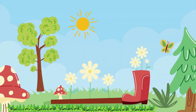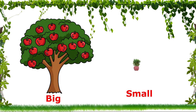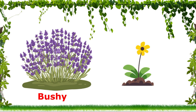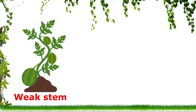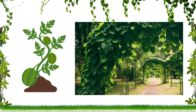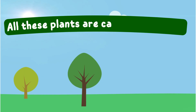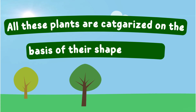Many plants grow in a garden. Some are big, some are small, some are bushy, some are very small. Some plants have a big stem, some plants need support to stand. Some plants grow along the ground. All these plants are categorized on the basis of their shape and size.